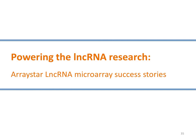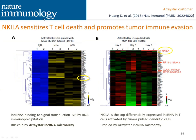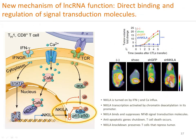Over the years, ArrayStar lncRNA microarrays have been powering lncRNA research and generated many high-impact scientific publications. For example, published in Nature Immunology, lncRNAs were immunoprecipitated by IκB antibody and profiled by ArrayStar lncRNA microarray. lncRNA NKILA was top-upregulated in activated CD8+ killer T cells on the ArrayStar microarray. Armed with this profiling information, NKILA was further found to bind NF-κB signaling complex, thereby turning off anti-apoptotic target genes — a new lncRNA regulatory mechanism by which lncRNA directly interacts with signal transduction molecules.